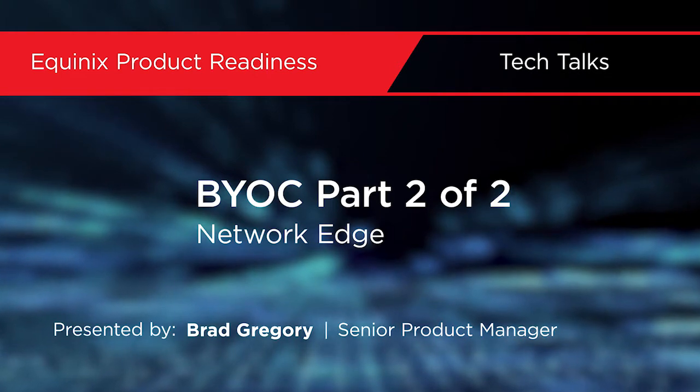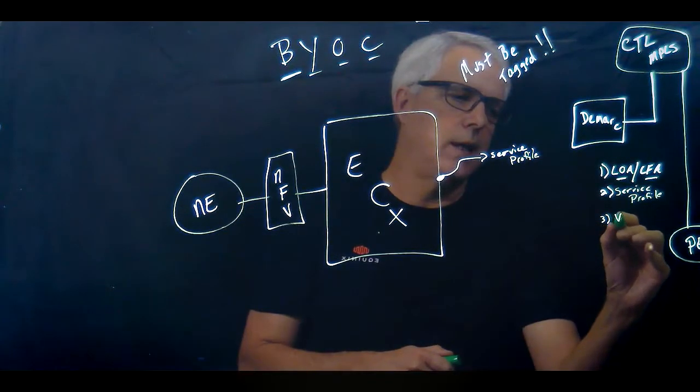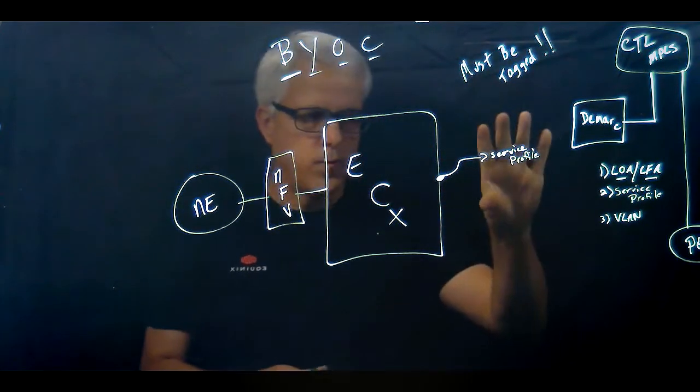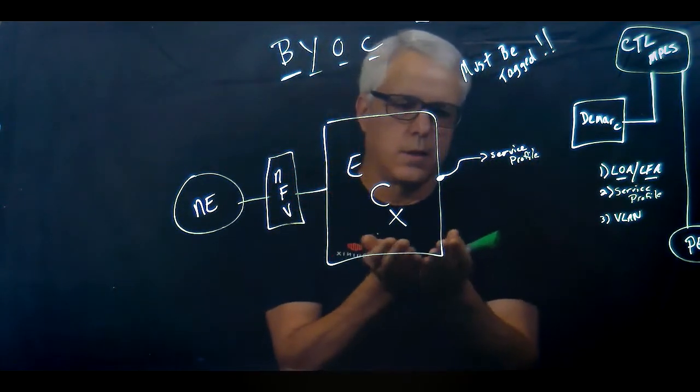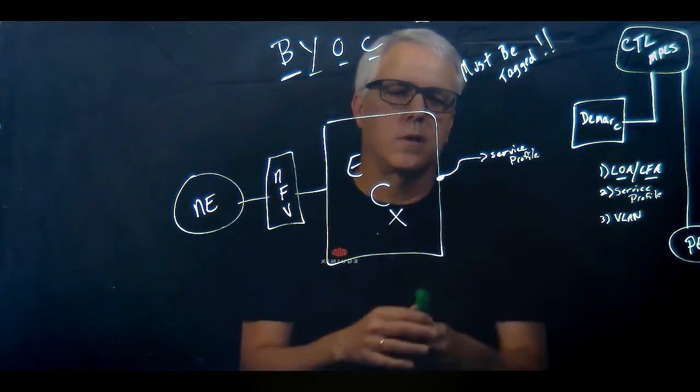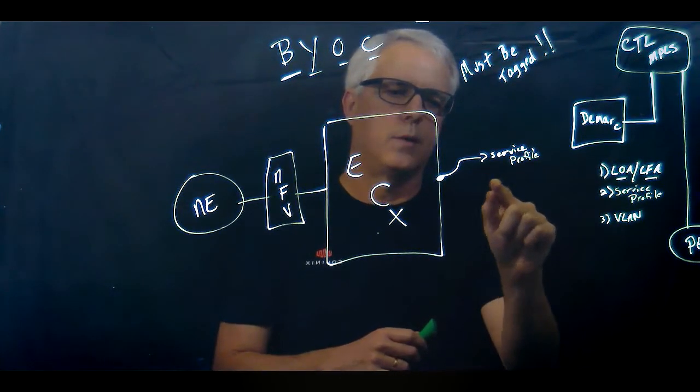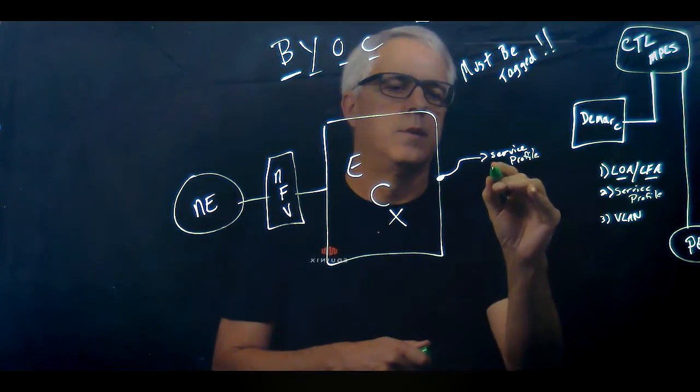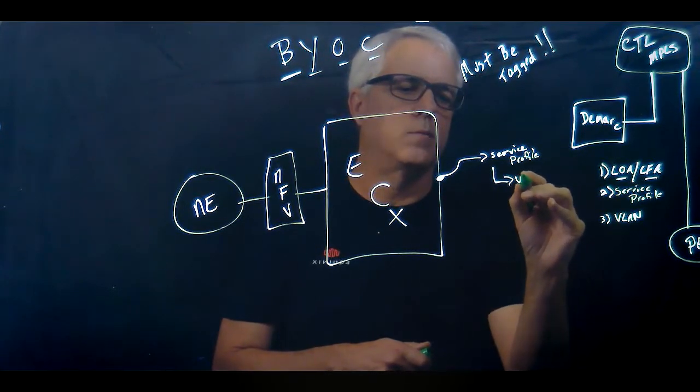The third thing that needs to happen is you tell it the VLAN. I like to think of the service profile as this shell or construct where I'm going to put variables that are unique to this connection. In this case, the VLAN is what will be unique to this connection.